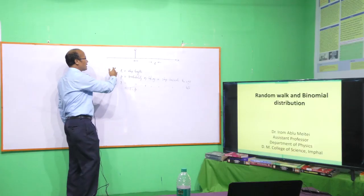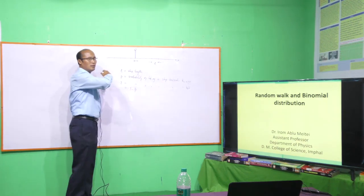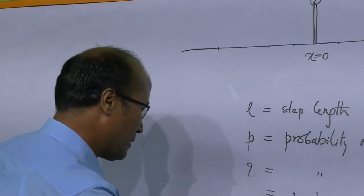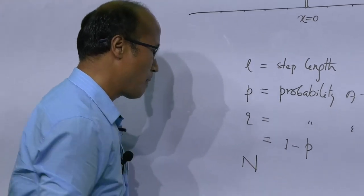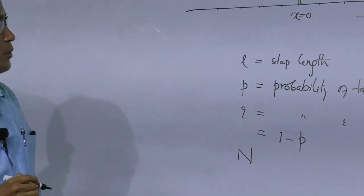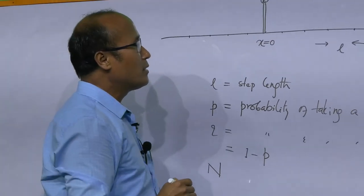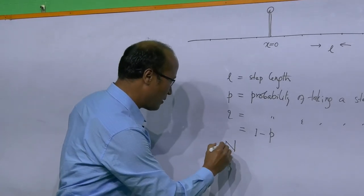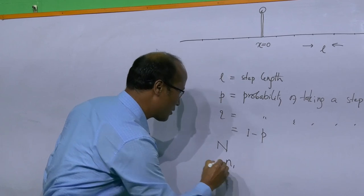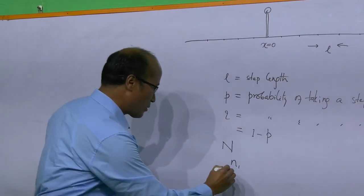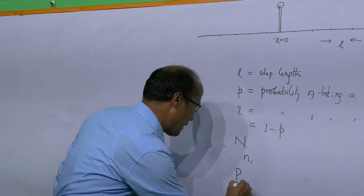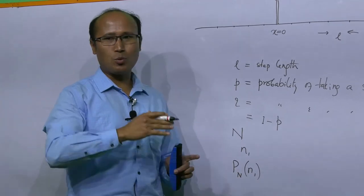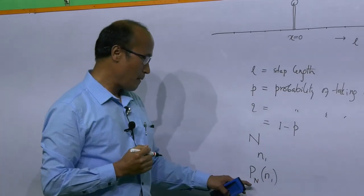So after starting out, this drunk man may take steps towards the left or right, and after some time, suppose that he has taken a total of N steps. Then we would like to find out what is the probability that this man has taken N1 steps towards the right. We want to find out P_N(N1): the probability of taking N1 steps towards the right out of a total of N steps.